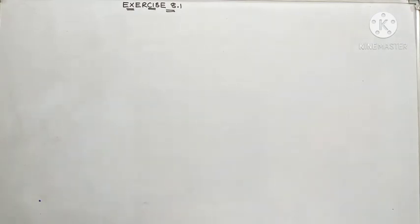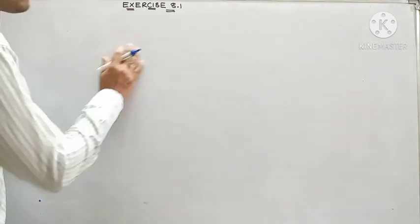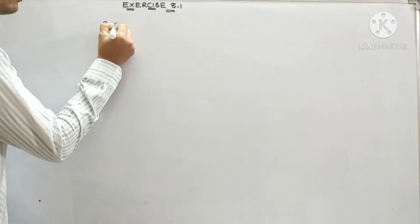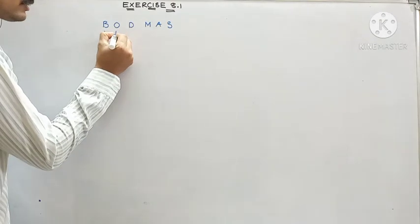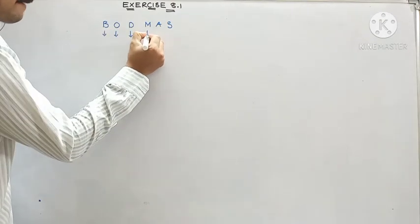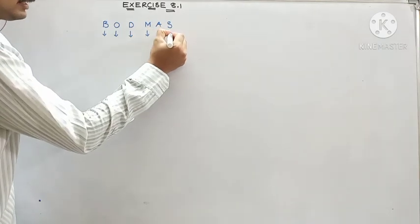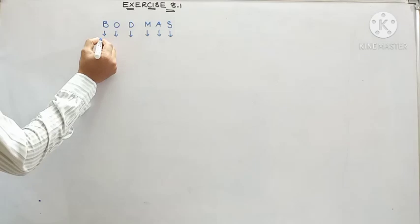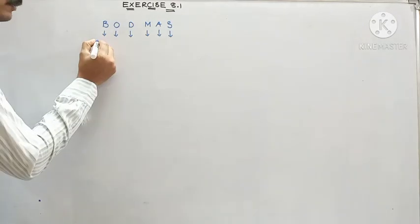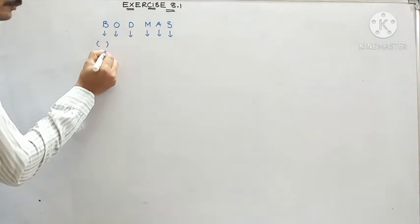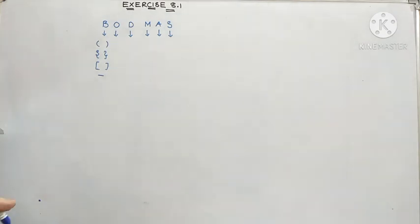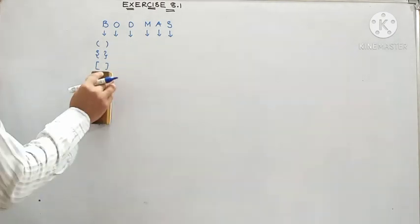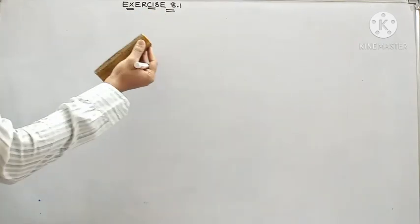A very pleasant morning, children. In yesterday's class we discussed the rule of BODMAS, in which B means brackets, O means of, D means division, M means multiplication, A means addition, S means subtraction. In brackets we dealt with different types of brackets — small bracket, curly bracket, big bracket, bar bracket — and the order of how to solve them. Today, using these same principles, we are going to start Exercise 8.1.